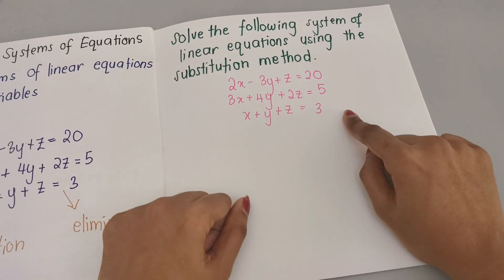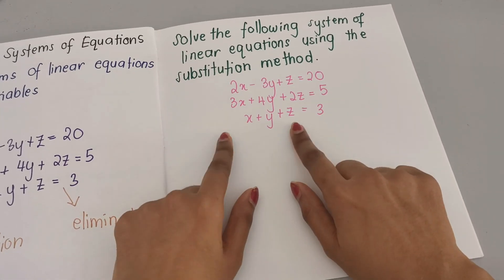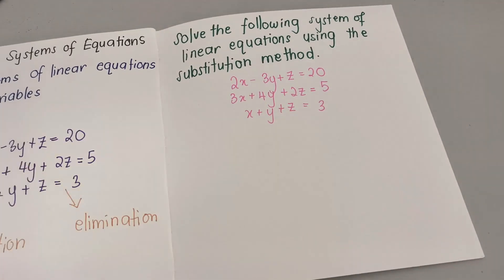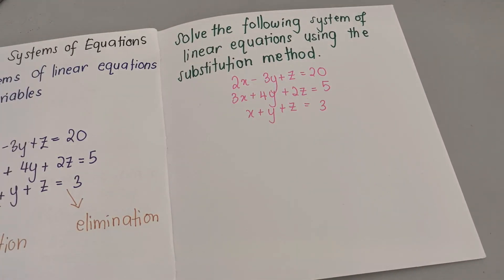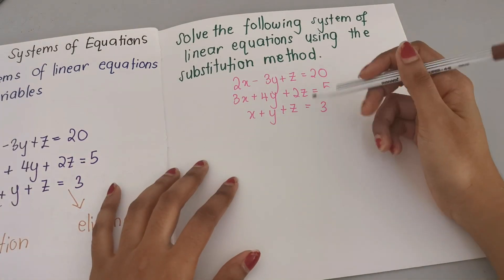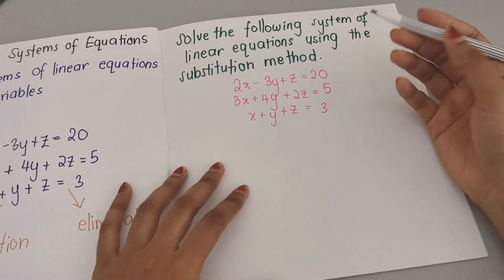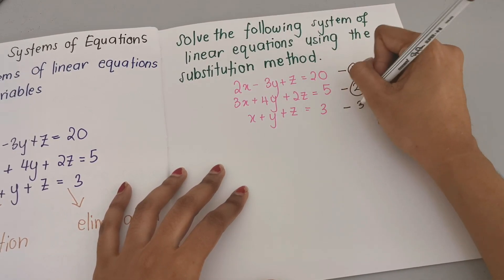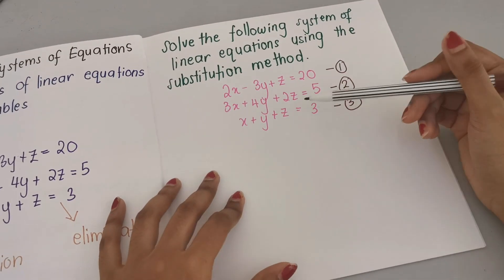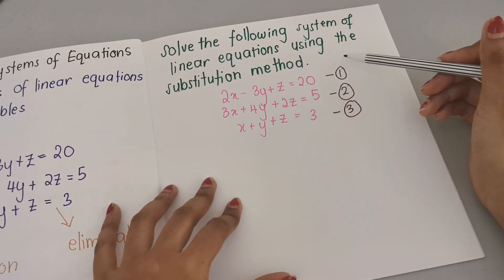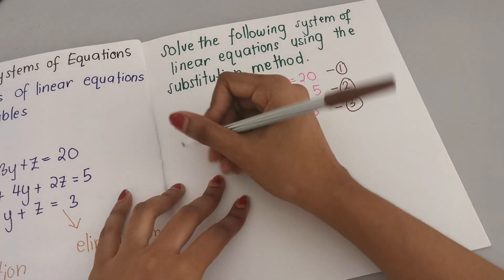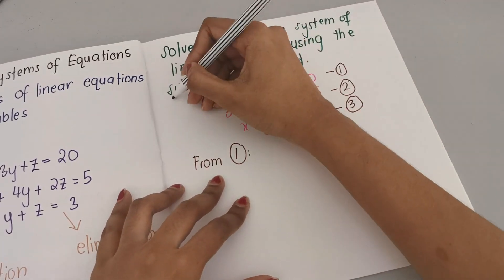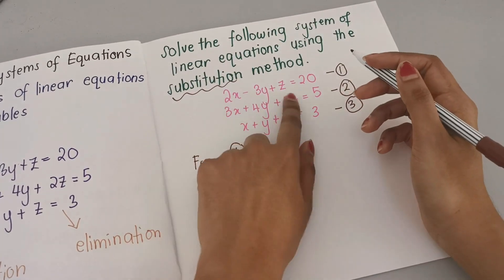The question is: solve the following system of linear equations using the substitution method. The first step is to decide which variable you want to substitute. I'll label these as equation 1, equation 2, and equation 3.